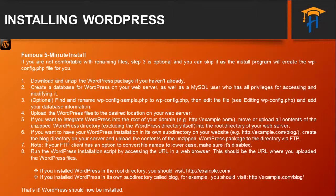Run the WordPress installation script by accessing the URL in a web browser. This should be the URL where you uploaded the WordPress files. If you installed WordPress in the root directory it should be visited as yourdomain.com, and if you installed it in a subdirectory such as blog, then you can use the URL yourdomain.com/blog. And that's it — WordPress should be installed.